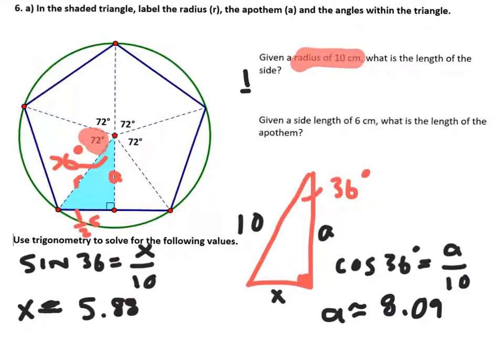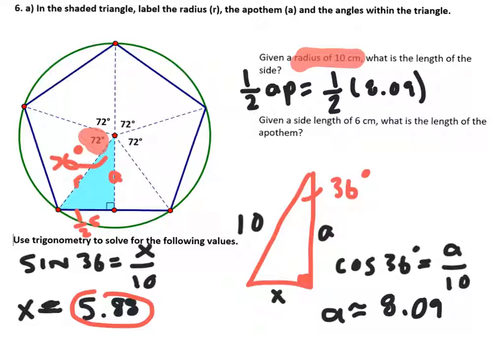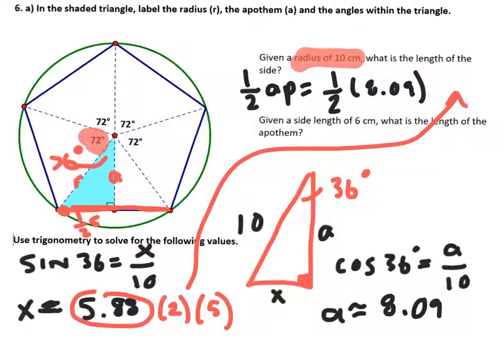And then you go back to your formula, which is 1 half the apothem times the perimeter. So it's 1 half. The apothem in this case is 8.09. And then the number that we got down here, let me quickly circle it so you can see it. We would double that value. We would double that value and multiply that. So we'd multiply that by 2 because that would get us the full side. And then we would multiply that by 5.